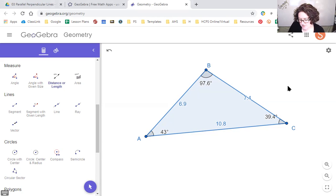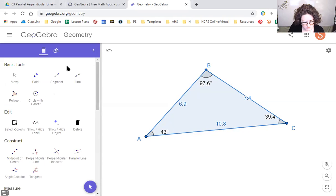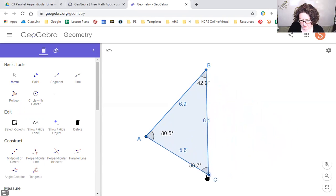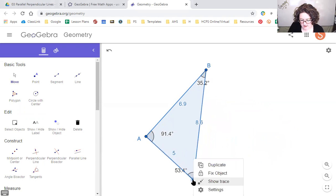That's where this program is pretty awesome. Let's pull point C around. I need to go back to my select tool, or my move tool. Then I can pull any of these points around, and look at what happens. Now, my biggest side is 8.6, and he is opposite what is now the biggest angle, A at 91.4. My smallest side, 5, is opposite my 35.2, which is now my smallest angle.